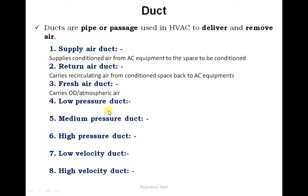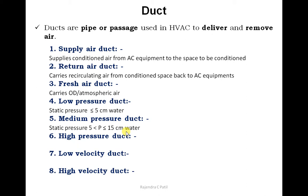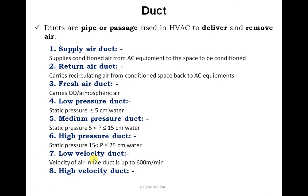Ducts are also classified on the basis of pressure. In ducts, pressure is always expressed in mm or cm of water column. When the static pressure of air flowing inside the duct is equal to or less than 5 cm of water, it is a low pressure duct. When it is more than 5 cm and less than 15 cm, it is a medium pressure duct. When static pressure is more than 15 cm, it is a high pressure duct. On the basis of velocity, if the velocity of air is up to or less than 600 m per minute, such ducts are called low velocity ducts.